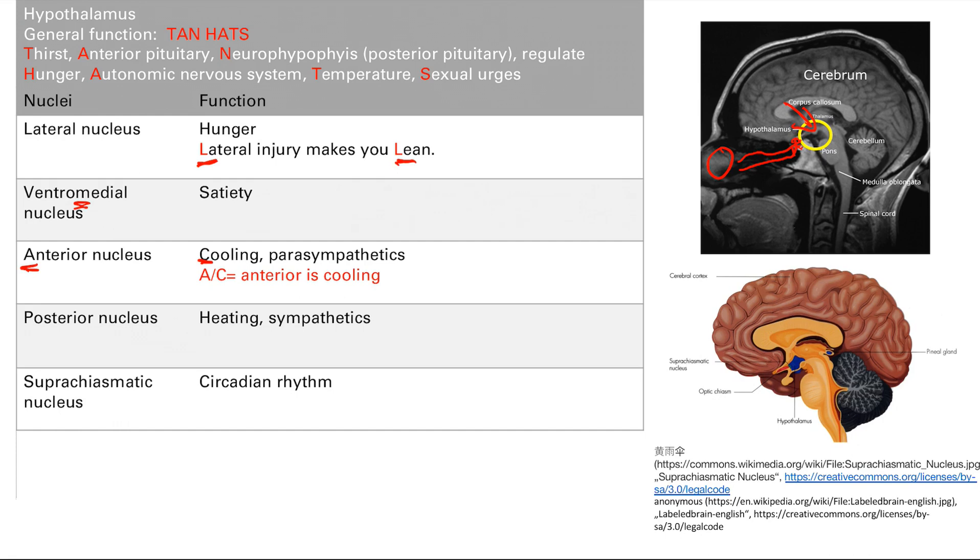We have the supraoptic and the paraventricular nuclei. These nuclei make ADH and oxytocin. These are two hormones. One gets you to basically retain water. It's the anti-diuretic hormone. So oxytocin is for the stimulation of the milk glands that contract and secrete milk. These hormones are made in the nuclei in the hypothalamus. And they are sent down to the posterior pituitary, which will release these two hormones.